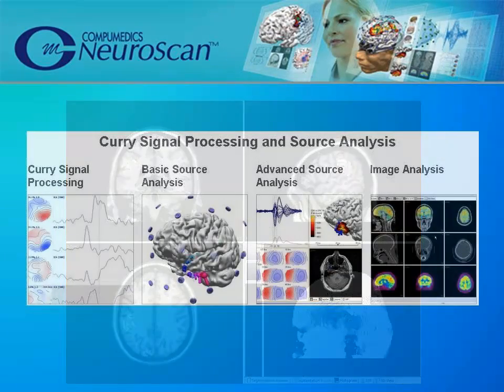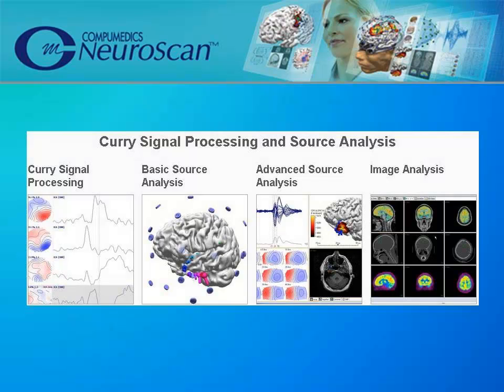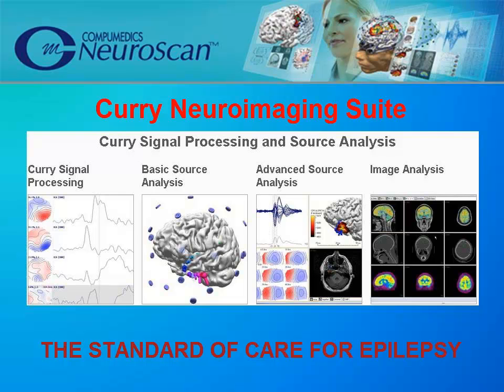CURRY began its life more than 20 years ago as a highly sophisticated research tool. One branch of its development was the study of epileptic phenomena, including spikes. CURRY has evolved to include clinical neuroscience research with ripples and fast ripples, frequency domain source analysis, and source coherence. The progression into the clinical realm is happening now, with multiple facilities adopting CURRY as a natural evolution as the standard of care for epilepsy.